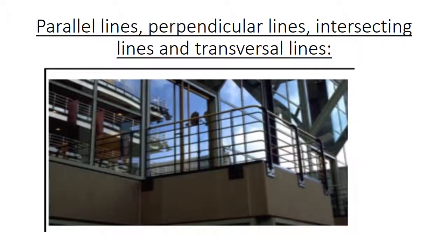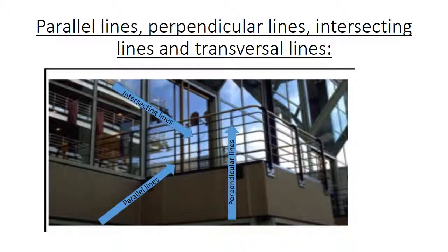Where do you find this in real life? Look at this building. You're going to see many parallel lines. It means the distance between the lines will always be the same. A perpendicular line will always meet at a 90 degree angle with another line. The intersecting line is just going to cross over with one of the lines, and our transversal lines is going to cross over with one or many lines.